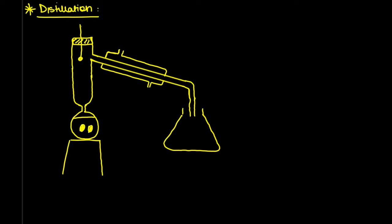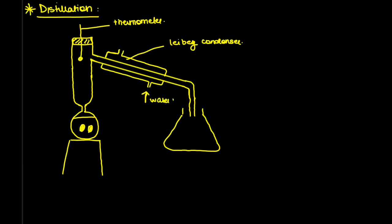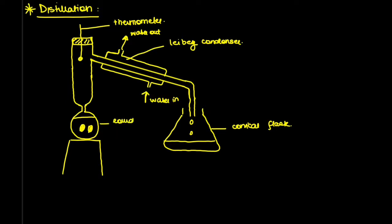The distillation apparatus includes a thermometer, a special apparatus called the Liebig condenser, a round bottom flask on a tripod stand, and a conical flask to collect the distillate. Water comes in from one side of the condenser and exits from the other. Droplets collect inside the conical flask.